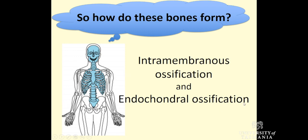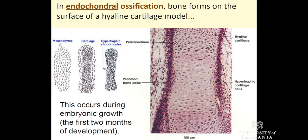We're going to look at the most common type first, which is endochondral ossification, and then at the end we'll have a quick look at intramembranous ossification, which is a bit rarer in the human skeleton. In endochondral ossification, bone forms on the surface of a hyaline cartilage model. During embryonic development, the first few months, we get our primitive connective tissue known as mesenchyme — a primitive fetal connective tissue. These cells coalesce and differentiate from stem cell-like connective tissue cells into chondroblasts and chondrocytes.